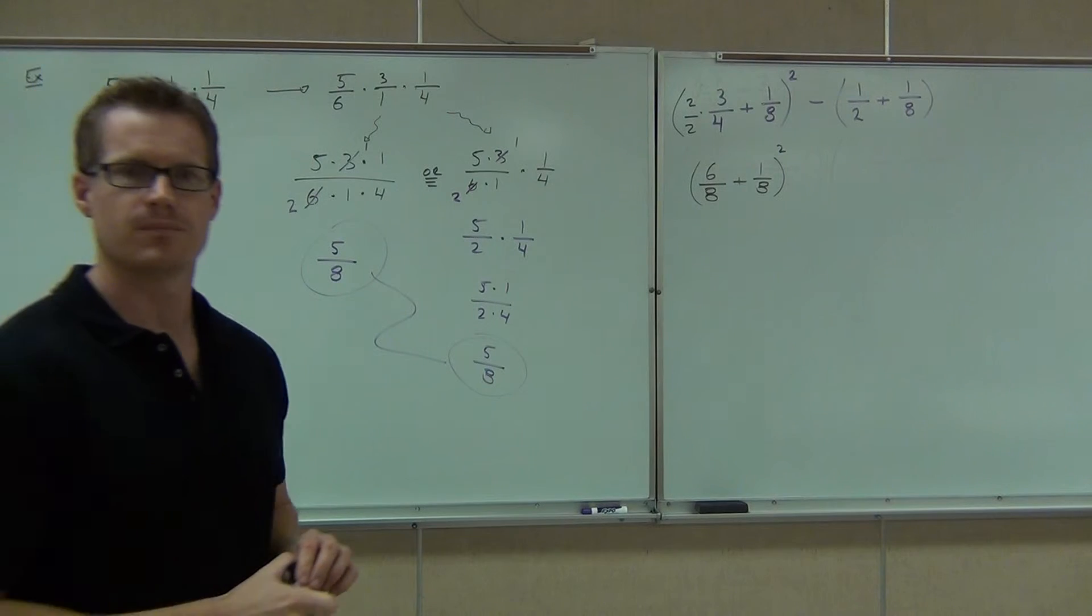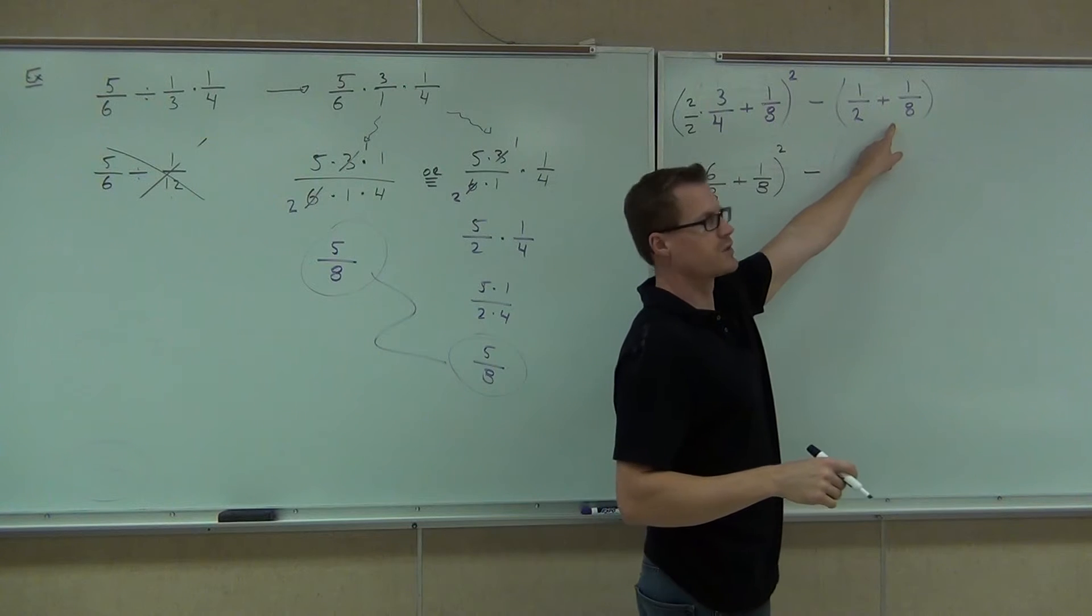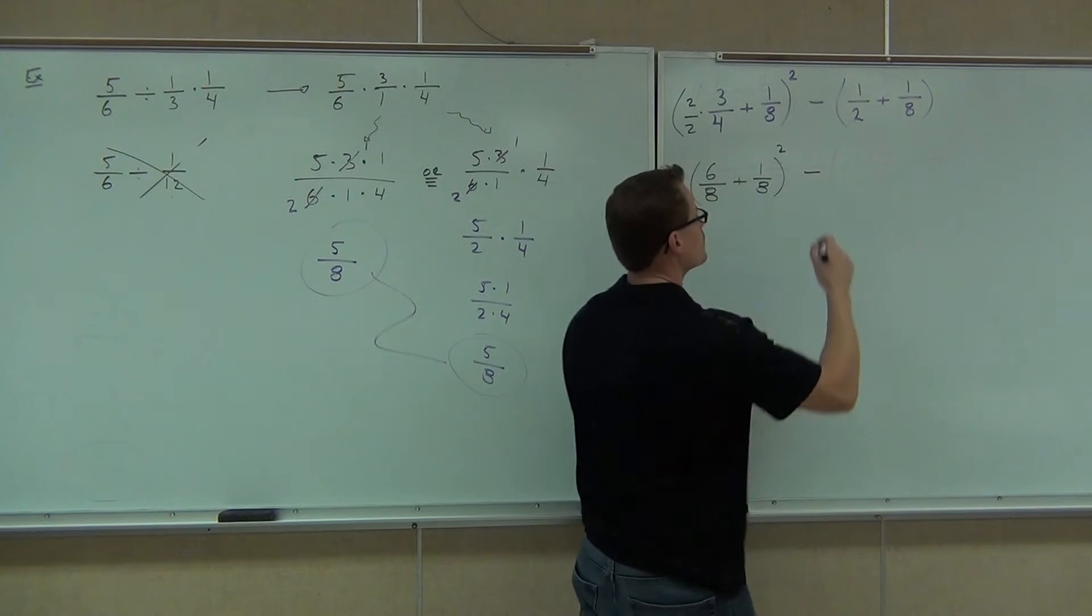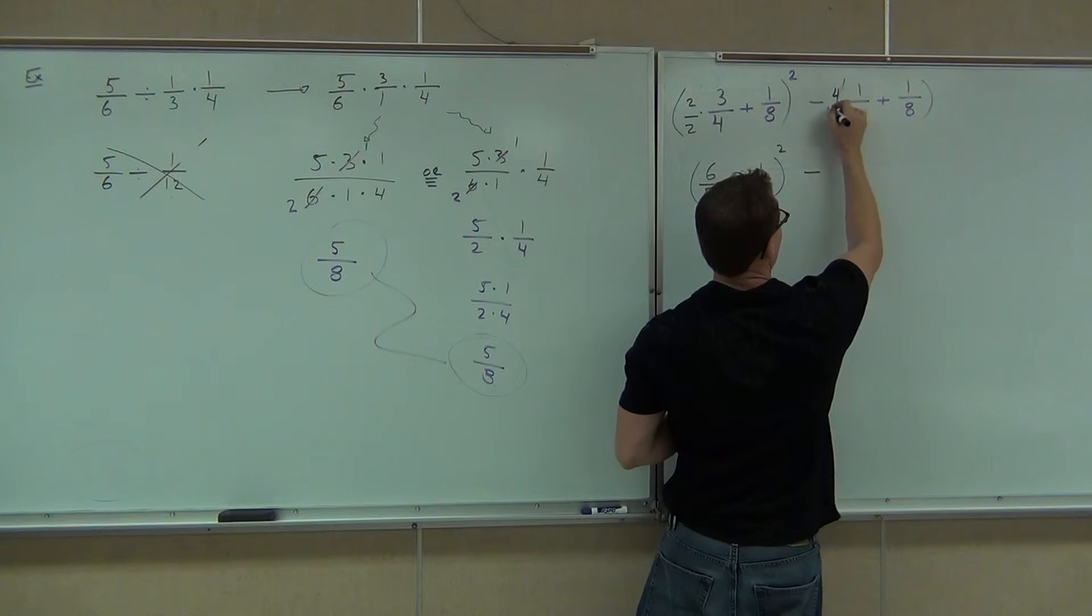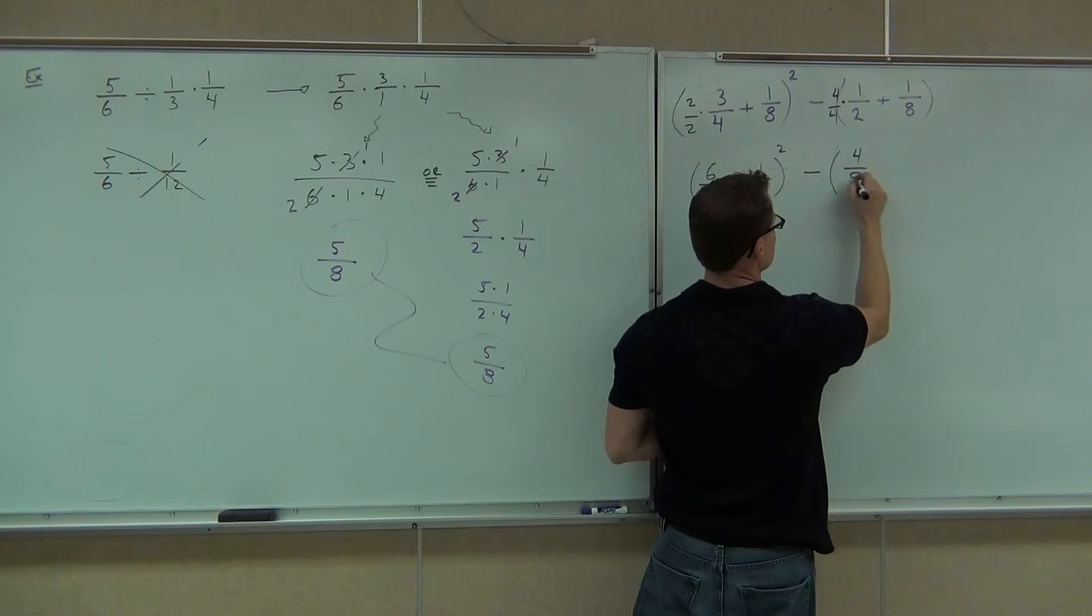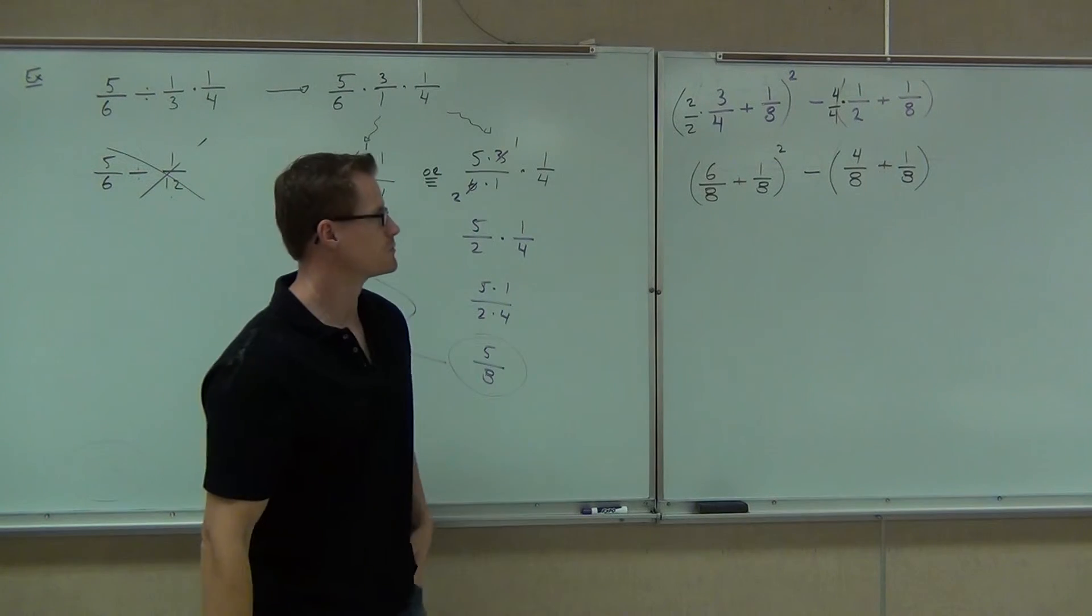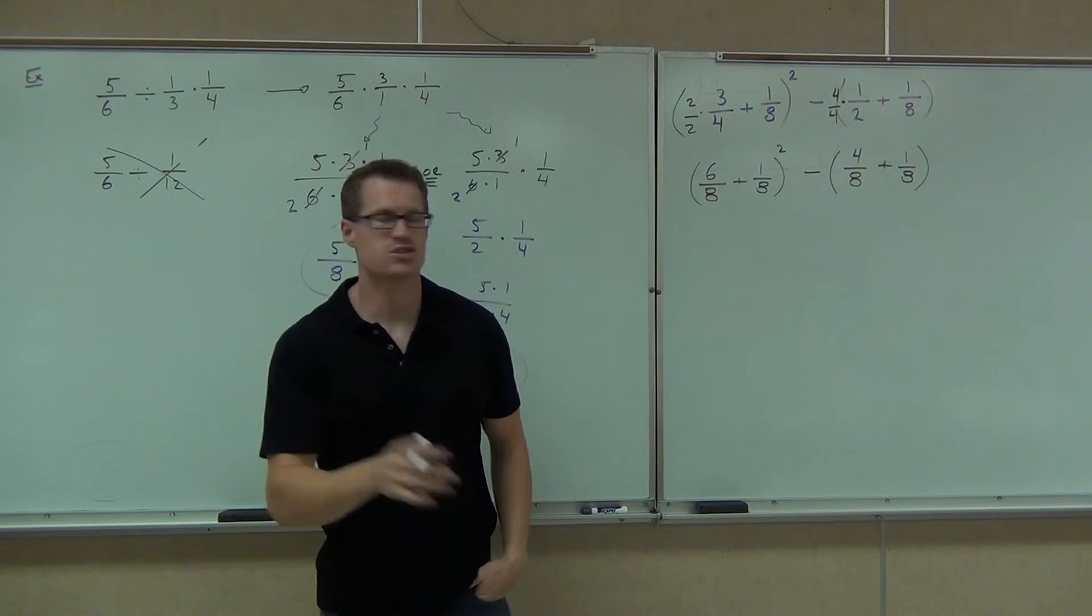We'll get six-eighths plus one-eighth squared. Gentlemen, are you with me? Minus, what's the LCD for our next couple fractions? Eight. So, here we'll do four over four. And we'll get four-eighths, one-eighth. Cool.